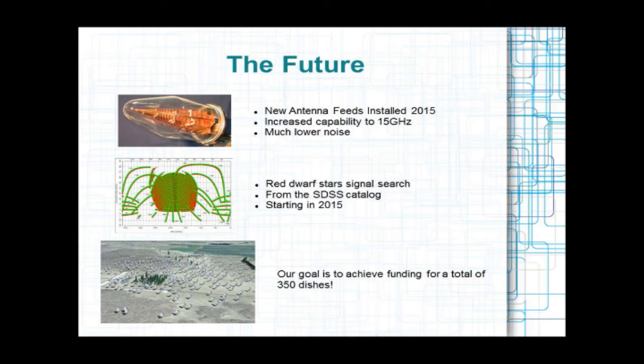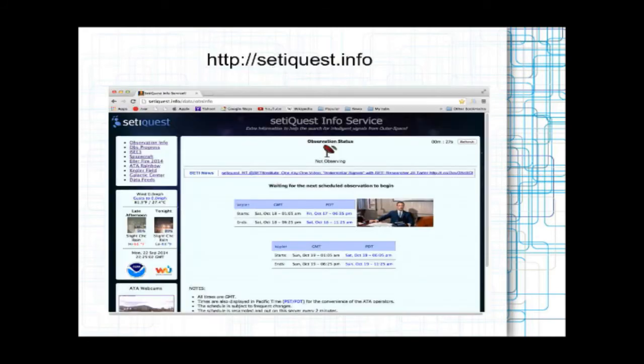And that's it. Anybody got questions? Oh, one more thing. Visit my site regularly, so I got this site I put up called setiquest.info, and I have our schedule, our observing schedule. And then when we're actually observing, that top red dish icon turns into a display of what we're actually looking at. It tells you the RA and dec and the frequency we're looking at. And over there on the left menu I have interesting images and the spacecraft we've been looking at and other such things. So I'd appreciate if you guys can go there and look.